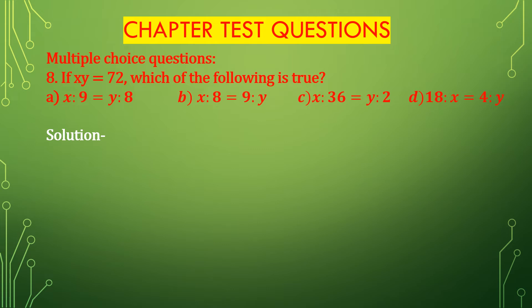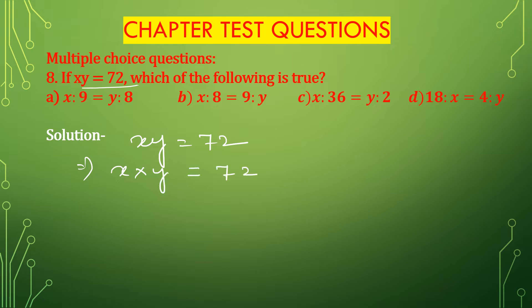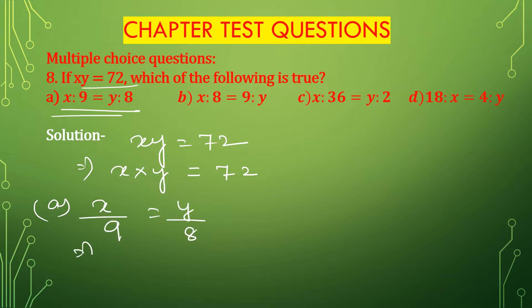Now question number 8. If xy is equal to 72, which of the following is true? So x multiplied with y is equal to 72. The first option is x divided by 9 is equal to y divided by 8. Cross multiplying, we get x is equal to 9y. This is wrong — false.